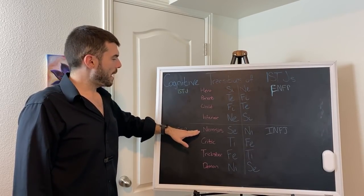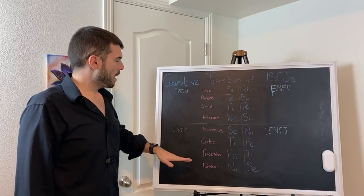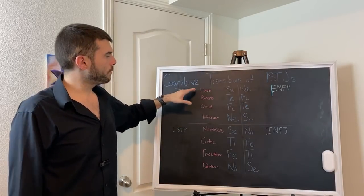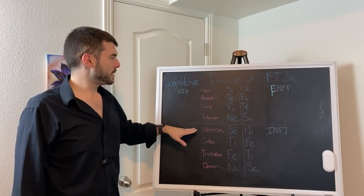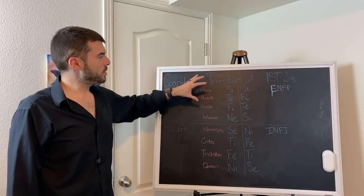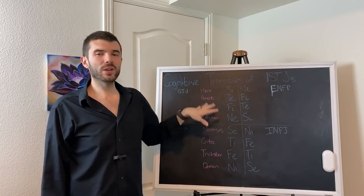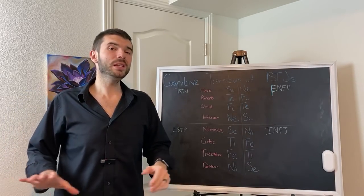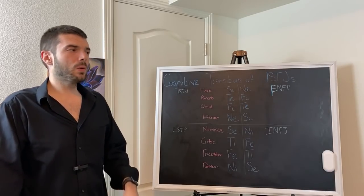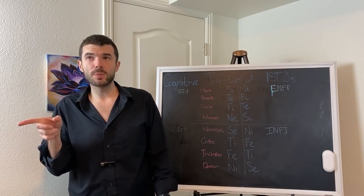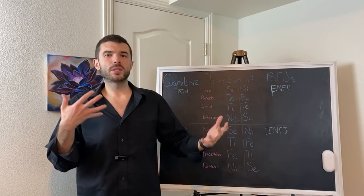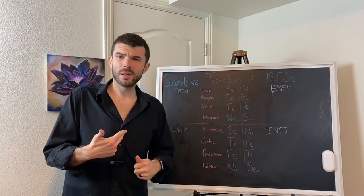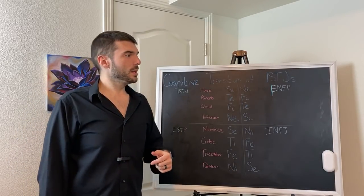Think of this as psycho neural energy. Cognitive functions are like neural pathways. This energy enters into four different locations through cognitive gateways, which are like irrigation channels. This is what happens with SI hero, NE inferior, SE nemesis, and NI demon. Those are the four cognitive gateways.